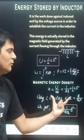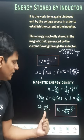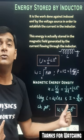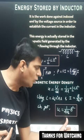When we substitute the value of L and i here, we can find this expression of energy density: u equals half B squared upon mu naught.